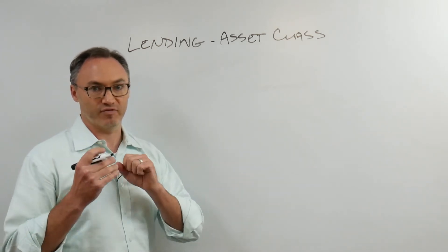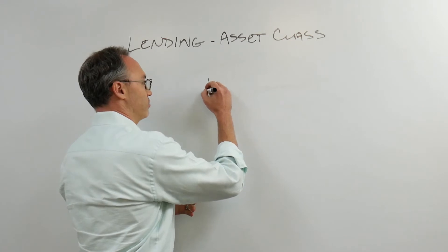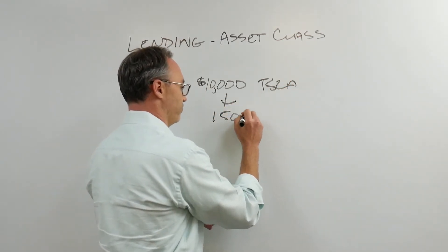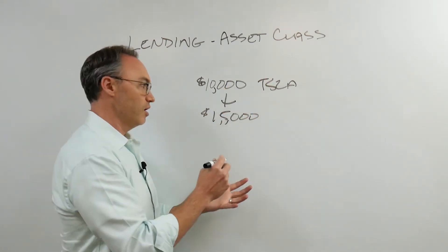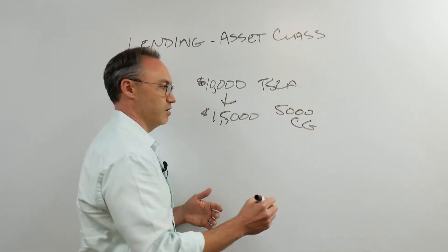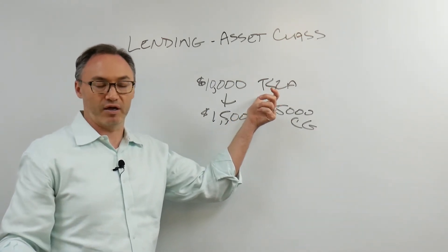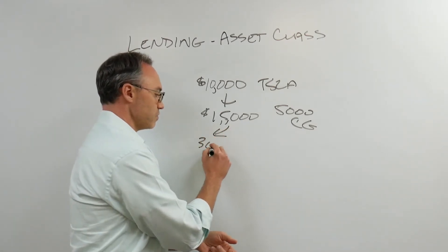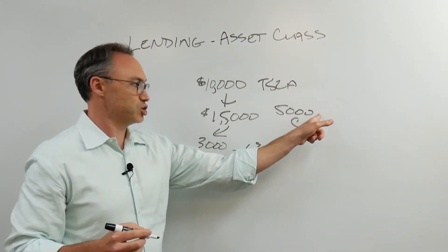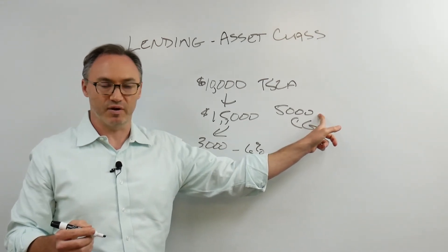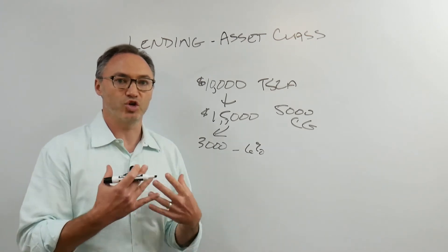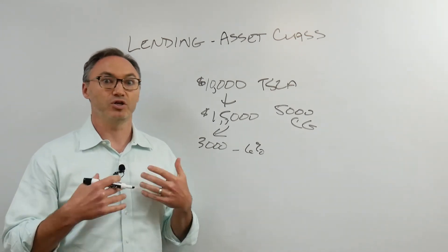Sometimes you don't want to sell an asset because of tax consequences. If I buy $10,000 worth of Tesla stock and it goes to $15,000, and I need $3,000 cash, selling means a $5,000 capital gain — possibly short-term, which means a high tax bill. If I can borrow $3,000 at six percent interest instead, I'd much rather do that. The difference between a short-term and long-term capital gain could be 15 percent tax. That's a big deal.